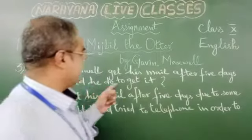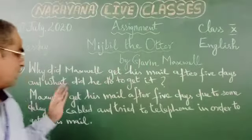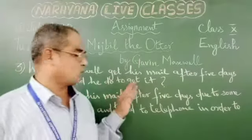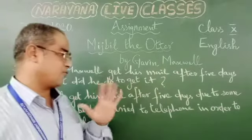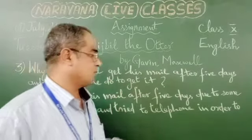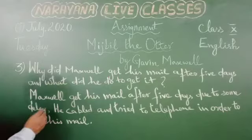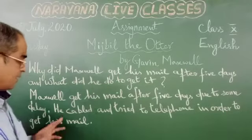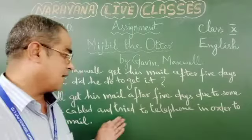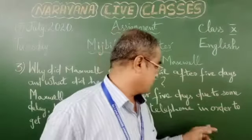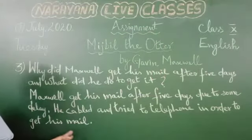Why did Maxwell get his mail after five days and what did he do to get it? Maxwell got his mail after five days due to some delay. He was not knowing the reason for the delay. He cabled, sent a telegram, and tried to telephone in order to get his mail.